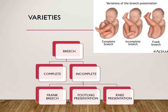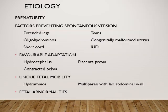The third variety is knee presentation, where the thighs are extended but the knees are flexed, so that the knees come down and present at the brim. The most common etiology of breech presentation is prematurity.